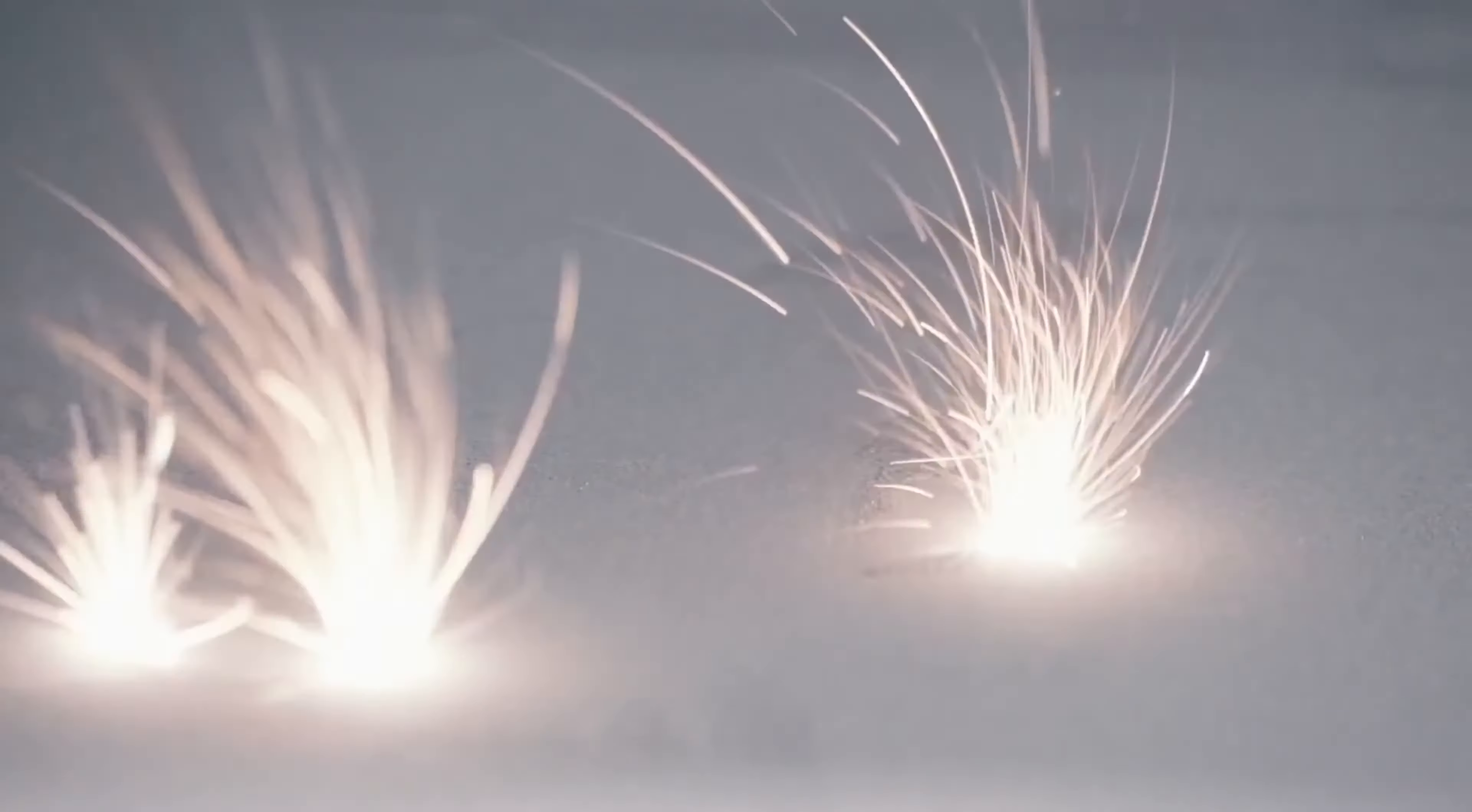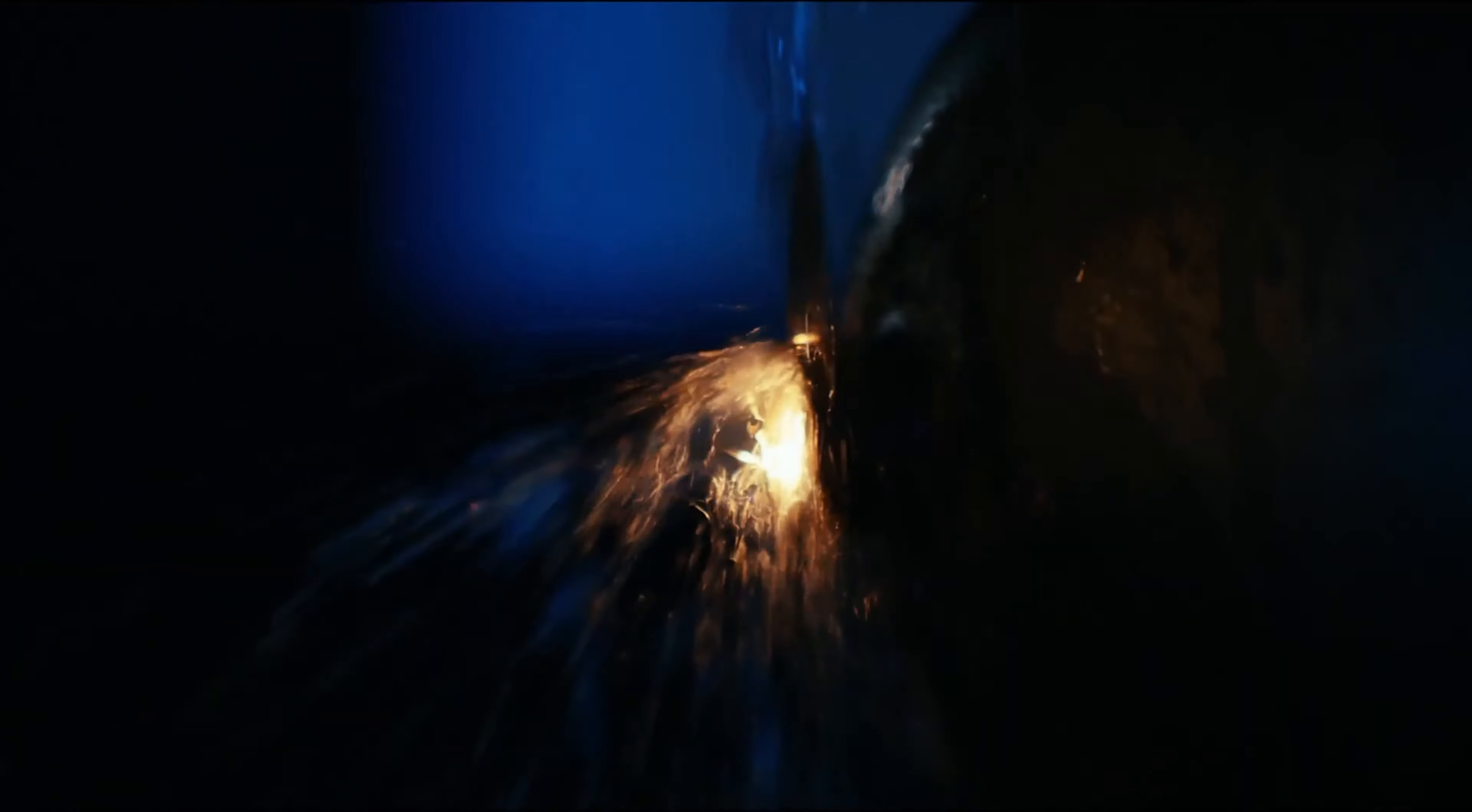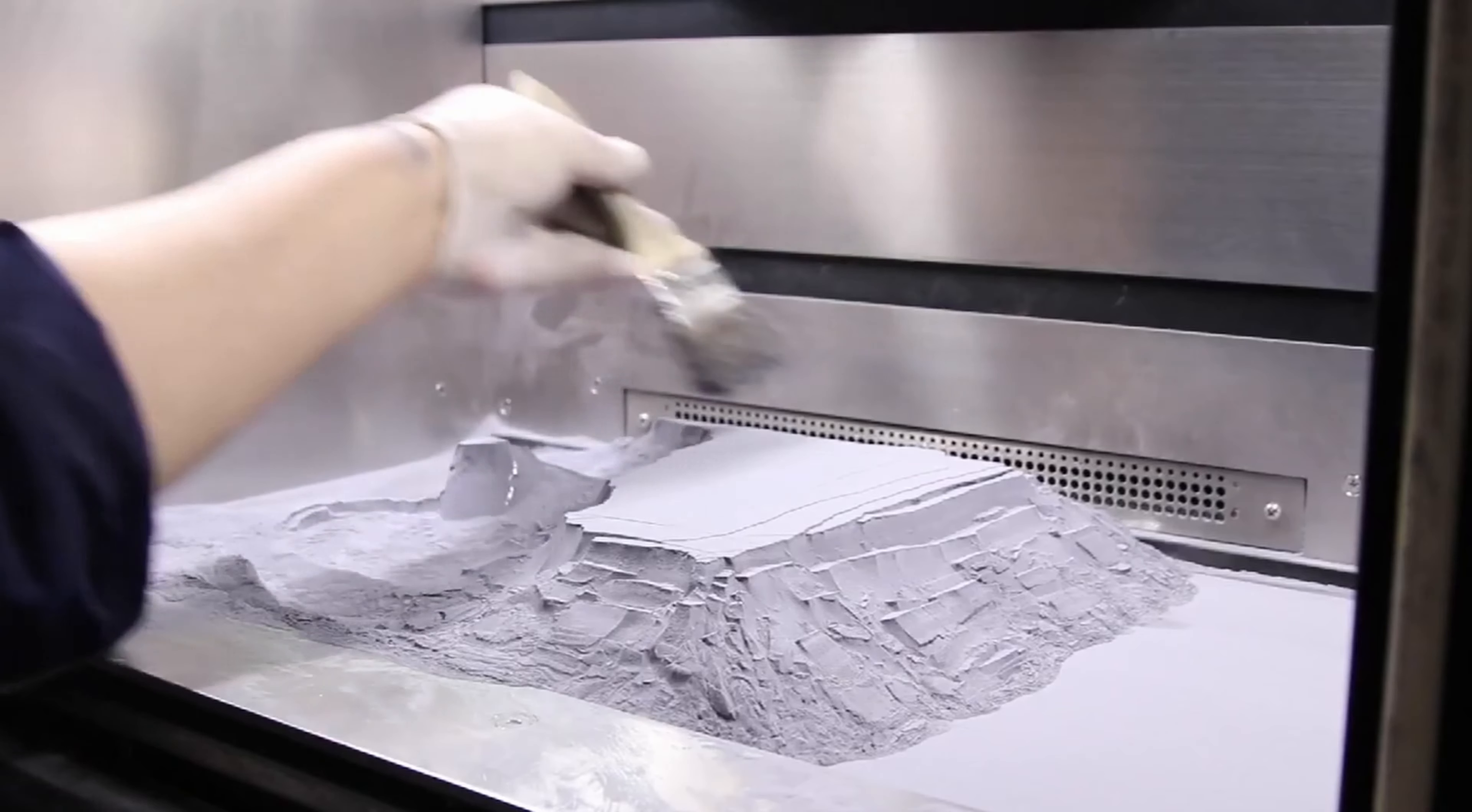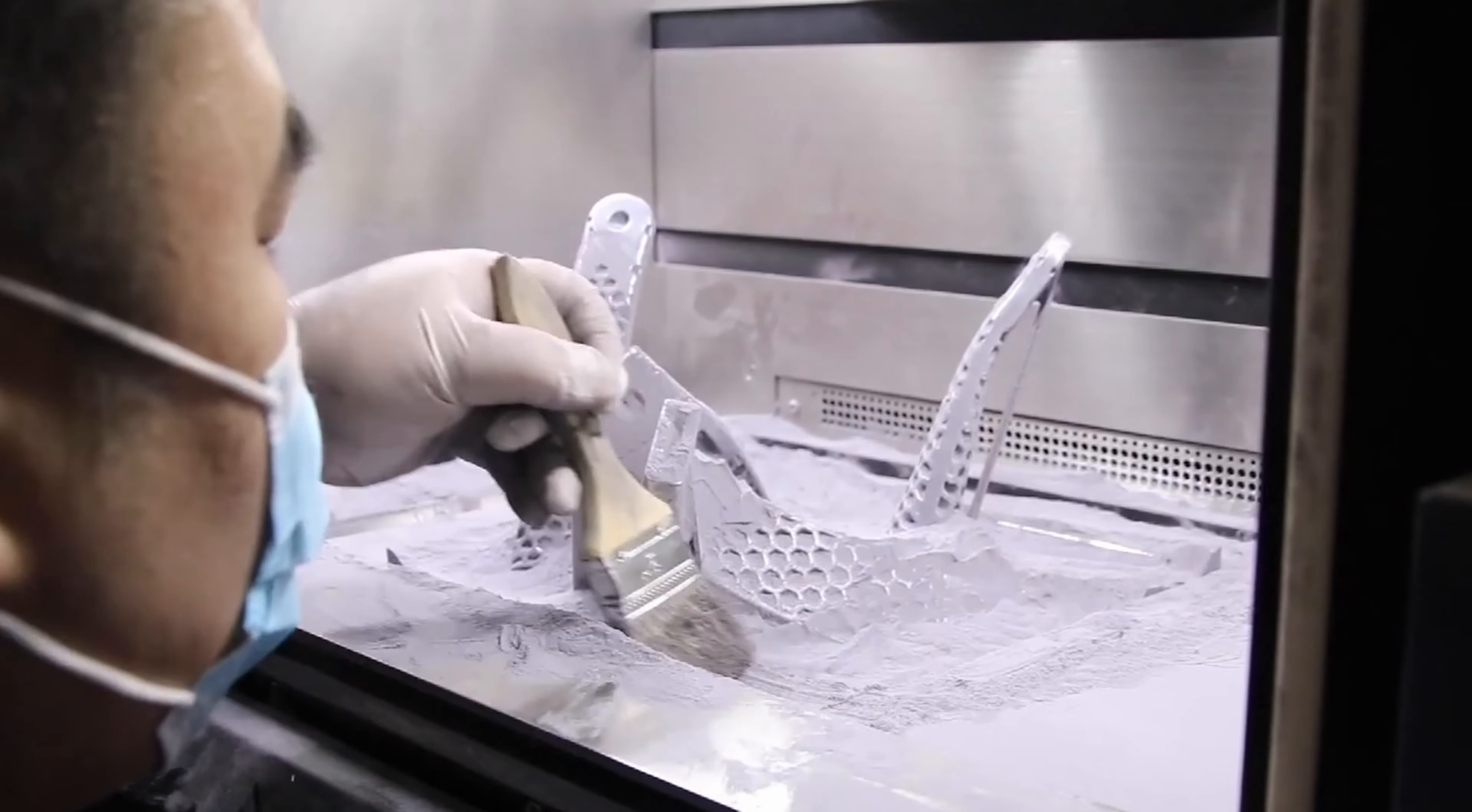Powder bed fusion, or PBF, is a technology that uses a heat source, typically a laser, to center or fuse atomized powder particles together. Commonly used materials are metals and polymers. Inside this technique, we can find direct metal laser sintering. This process, as its name suggests, uses a laser to center a very thin layer of metal powder. This process can be used to build objects out of almost any metal alloy.